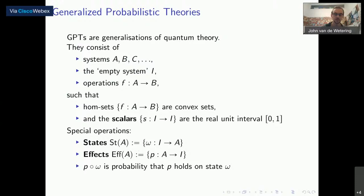There are a couple of special operations: states, which go from the empty system to a given system and are the ways in which we can prepare a system; and effects, the ways in which we can destroy or measure the system. We can combine these two things: if we compose an effect with a state, we get a probability, a number between 0 and 1. This is the probability that the predicate or effect p holds on the state omega.